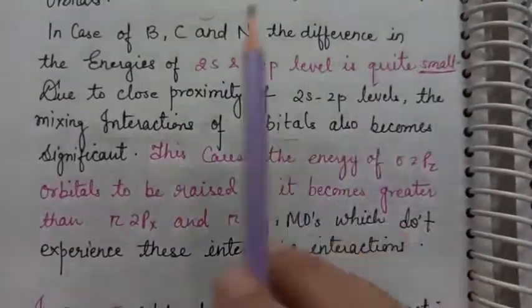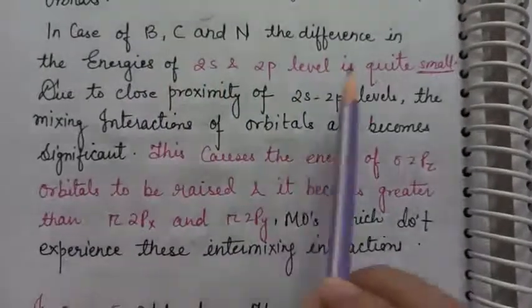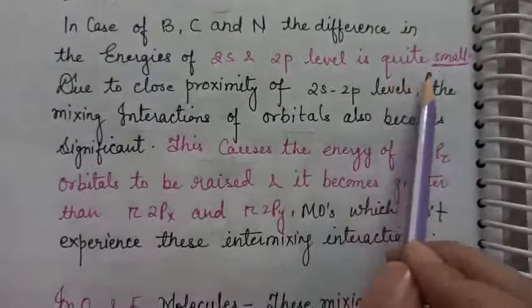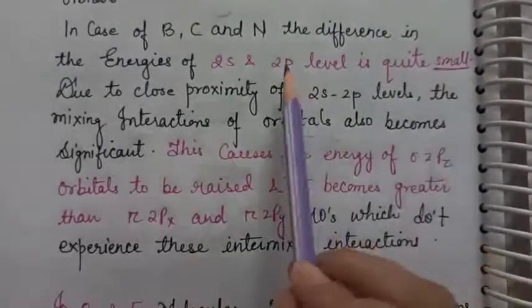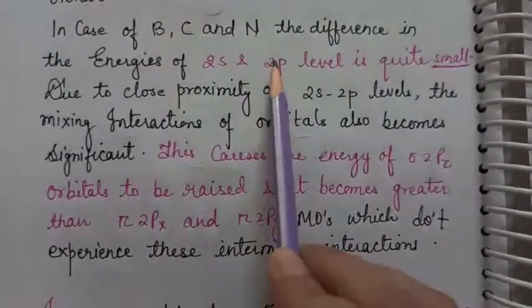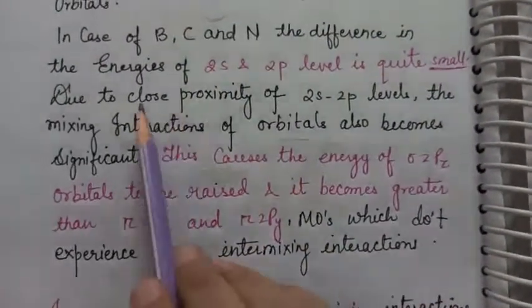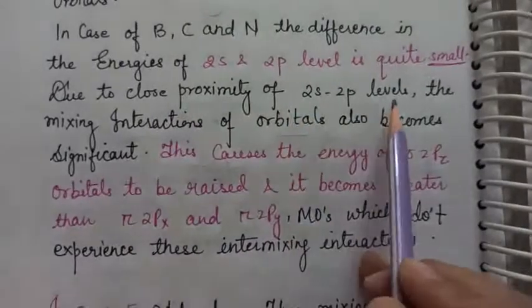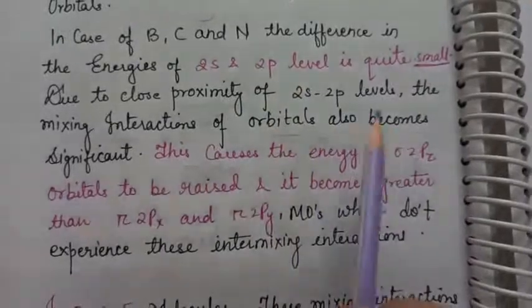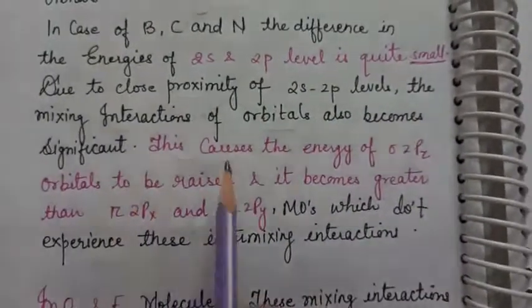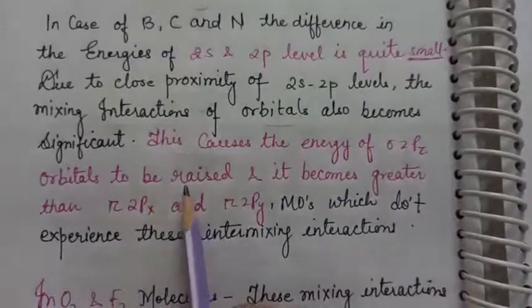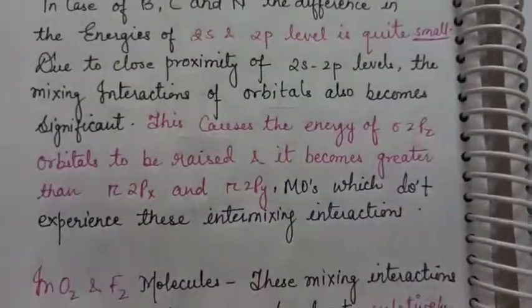In case of B, C and N, the difference in the energies of 2s and 2p level is quite small. 2s and 2p orbitals energy gap is very low, or you can say their energy difference is very low. And because of this close proximity, the mixing in orbitals is also significant. Because of this, the energy of sigma 2pz is raised.